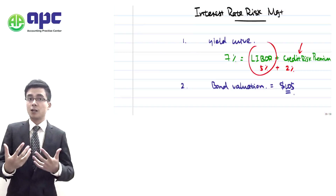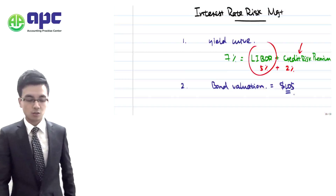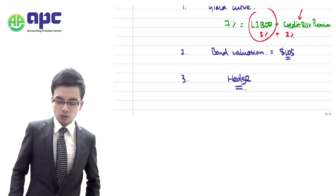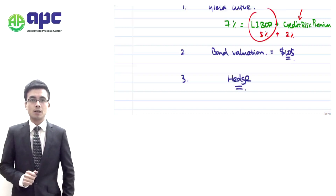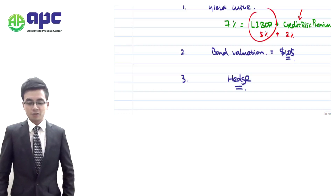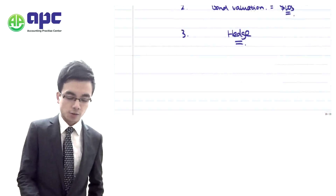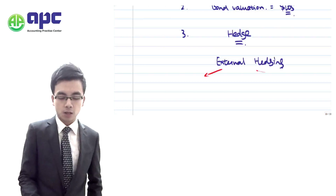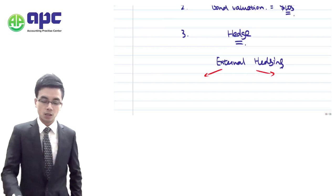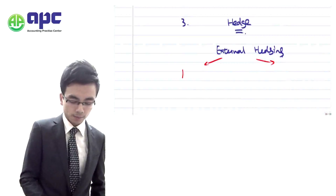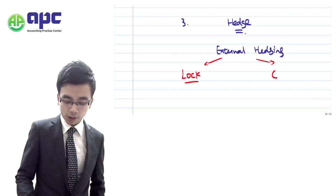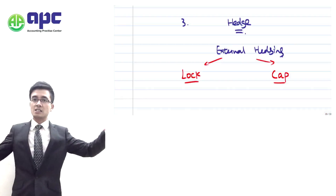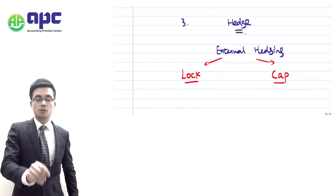If we are going to borrow money from the bank, we are afraid the interest rate will rise, so we use hedging approaches. From the exam's point of view, the examiner particularly focuses on external hedging techniques, which can be summarised into two aspects: you can either lock the rate, fixing it to a fixed rate, or you can cap the rate by setting a maximum that you are willing to pay.